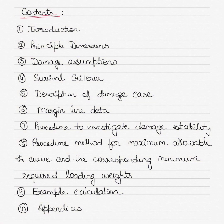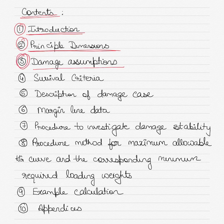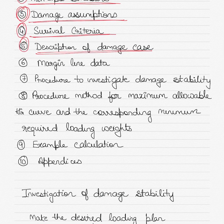The contents of the damage stability booklet include: first, an introduction to the booklet explaining its purpose and what it contains; second, the principal dimensions of the vessel — its spaces, cargo spaces, tanks, and so on; third, the damage assumptions — what would happen in varying cases of damage, flooding, or ingress of water; fourth, the minimum survival criteria required, such as the GM and KG required for the vessel in varying conditions; and fifth, a description of damage cases.